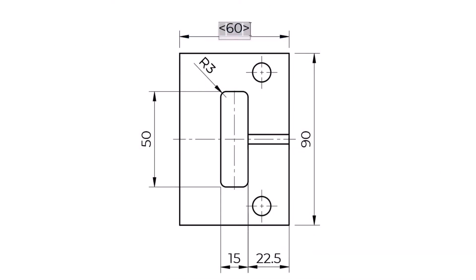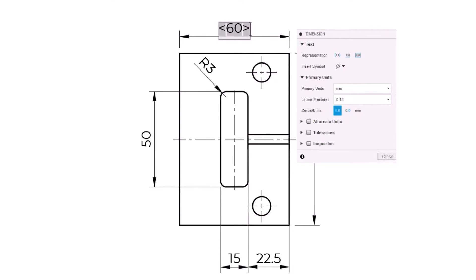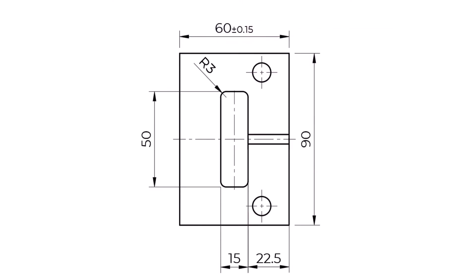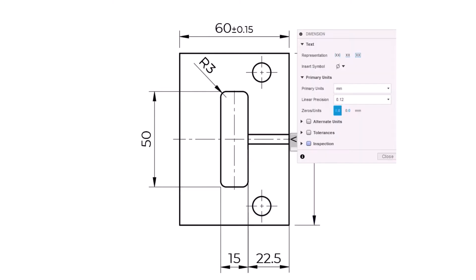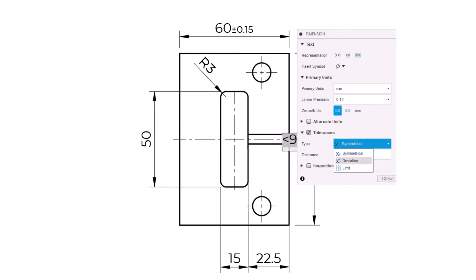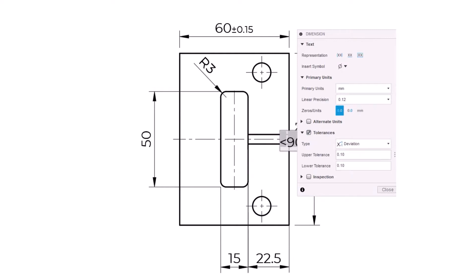The easiest way to define tolerances is to add them randomly to the drawing because we know how to do it in our CAD software, send it to our manufacturer, and hope that our parts will fit. But on the other hand, there is also an expensive way — we call our supplier and ask for the tightest tolerances they can achieve and then define them on the drawing.